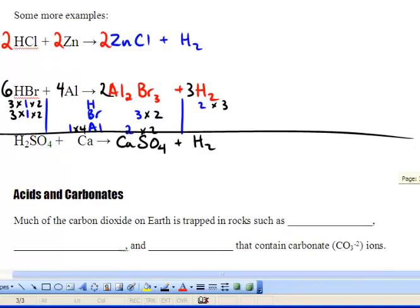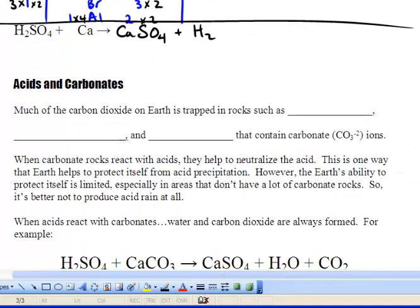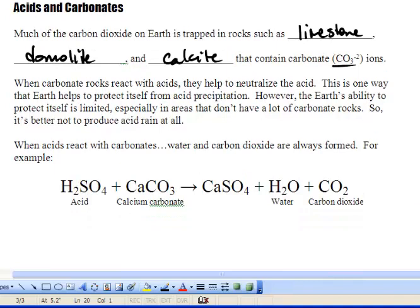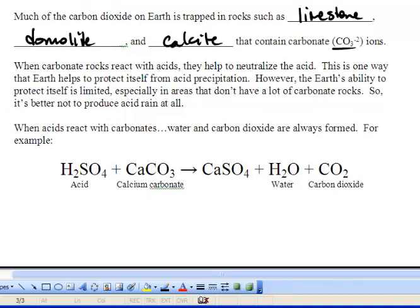Now moving on we've got acids and carbonates. Much of the carbon dioxide on the earth is trapped in rocks such as limestone, dolomite and calcite. These all contain carbonate ions. When carbonate rocks react with acids, they help neutralize the acid. This is one way that the earth helps protect itself from acid rain. However, the earth's ability to protect itself is limited. The amount of emissions we put in and the amount of acid rain breaks down a lot of rocks. When acid reacts with carbonate, water and carbon dioxide are always formed. For example, we've got H2SO4 plus calcium carbonate. We get calcium sulfate plus water plus CO2. We're going to be talking more about this in class. Have a good rest of the day.